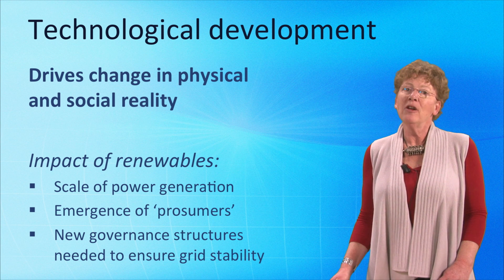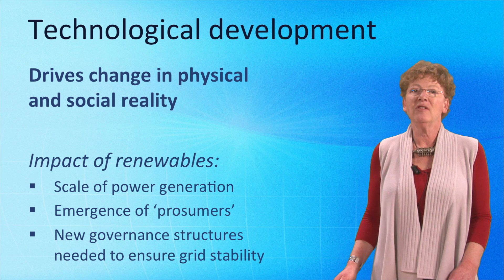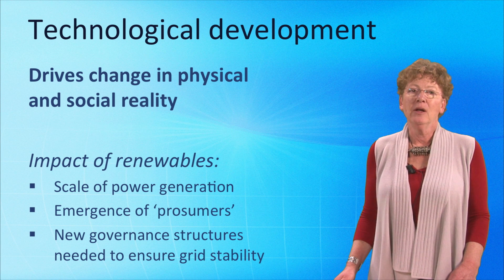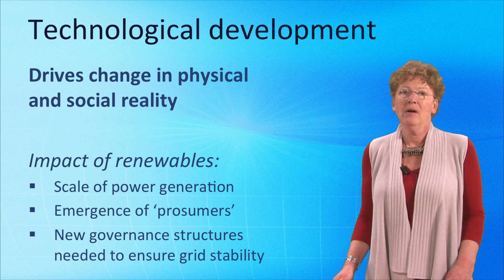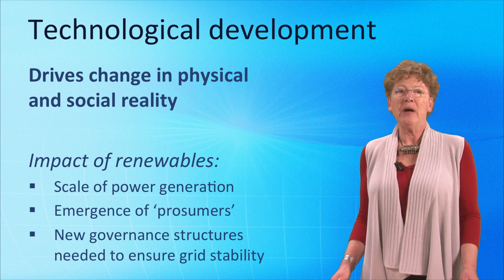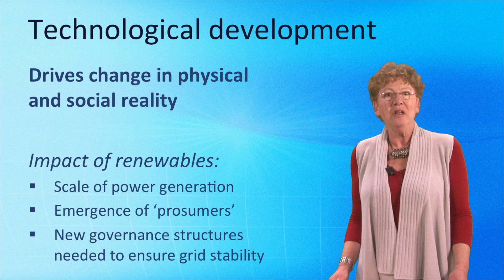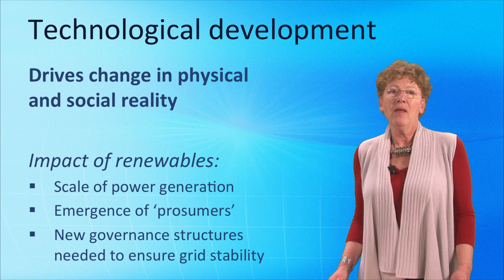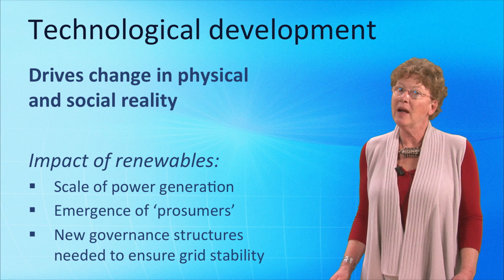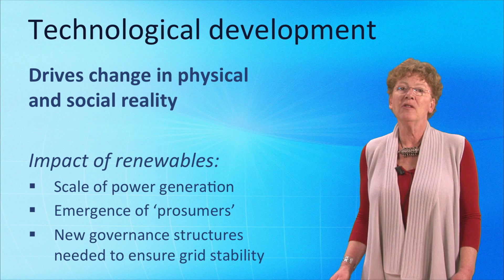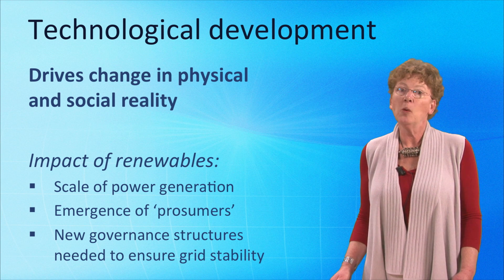These technological changes, however, can endanger the stability of the grid. To make sure that doesn't happen, operational practices need to be revised and new rules need to be implemented. This is another example of how the social and the technical dimensions of the electricity infrastructure are intertwined.